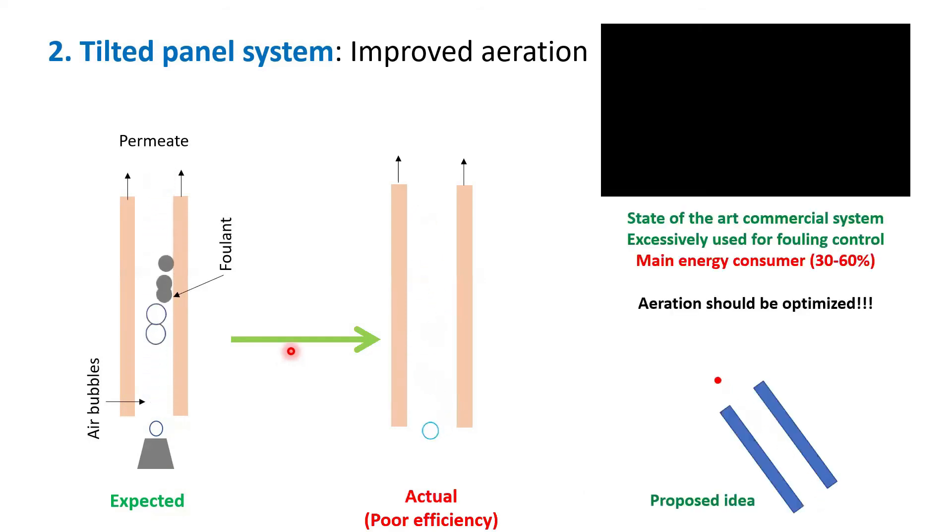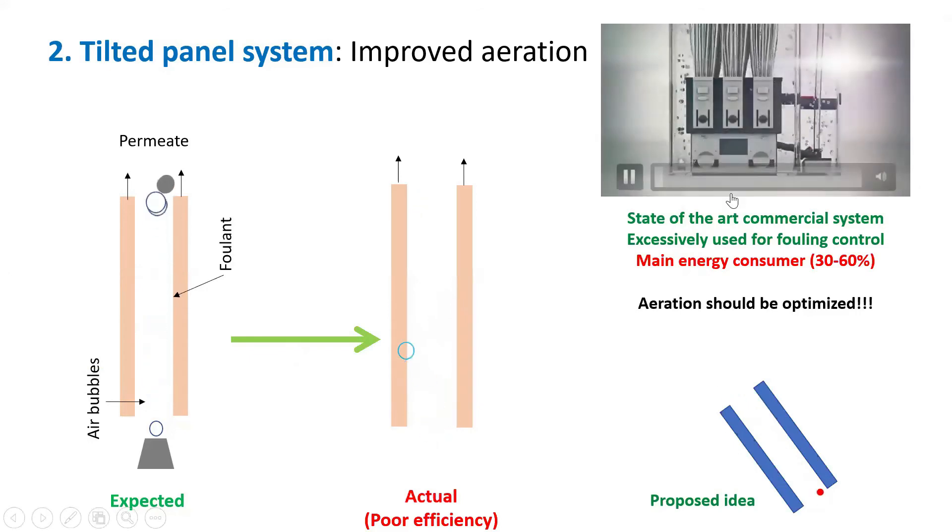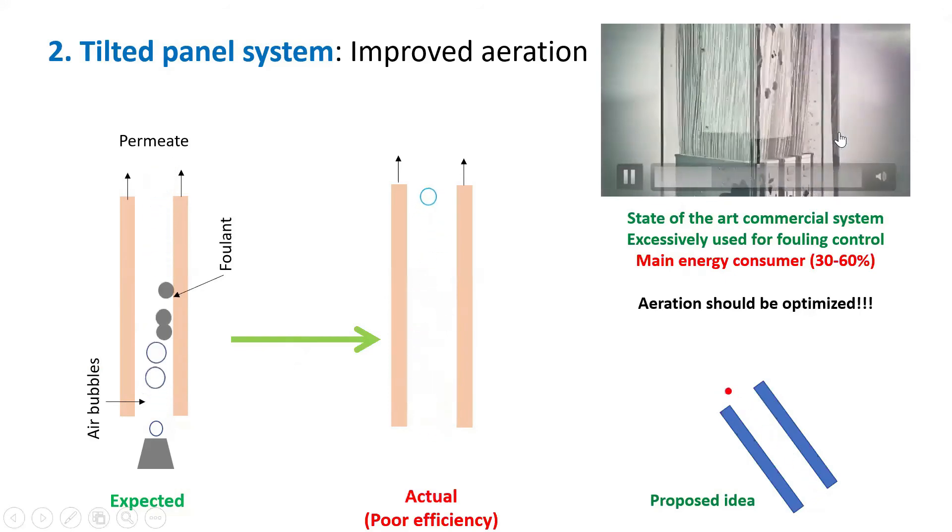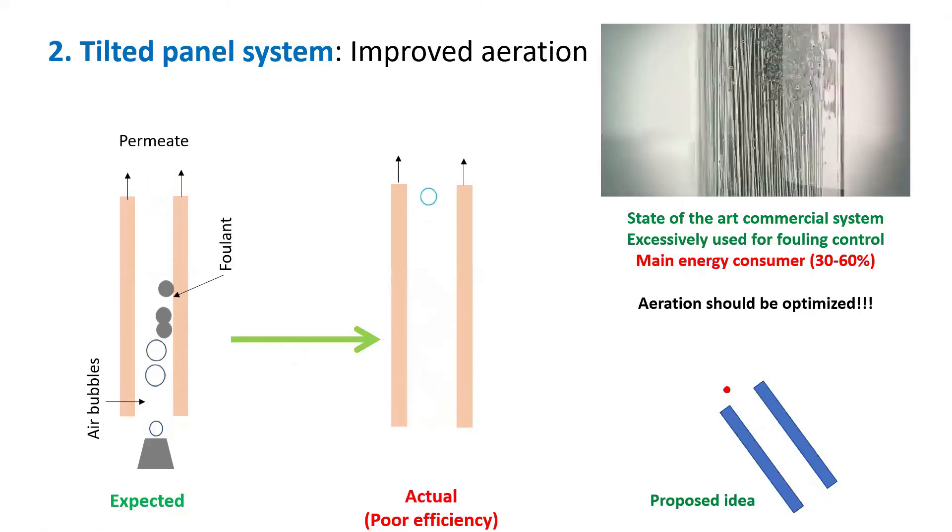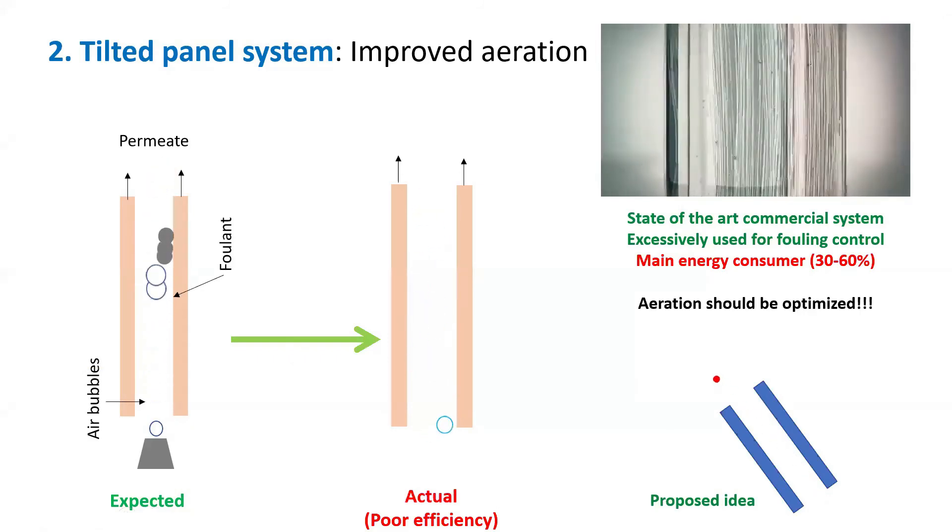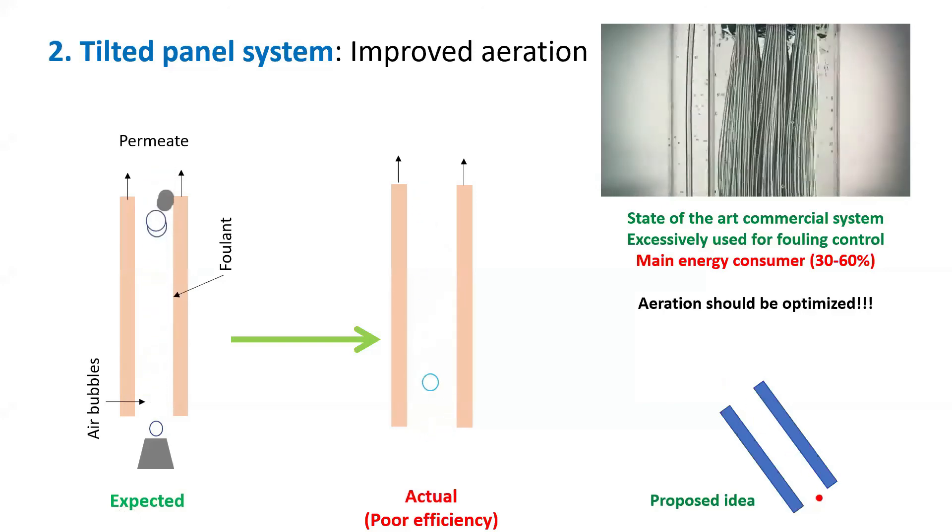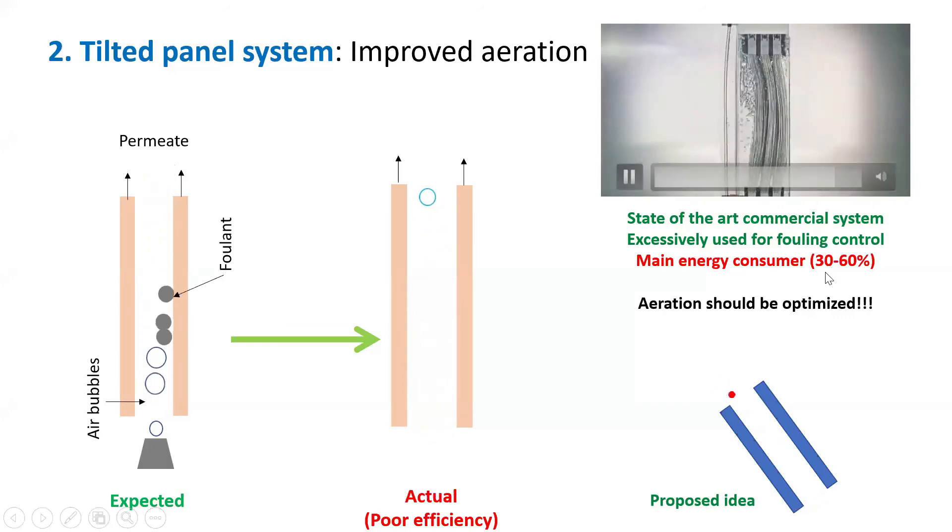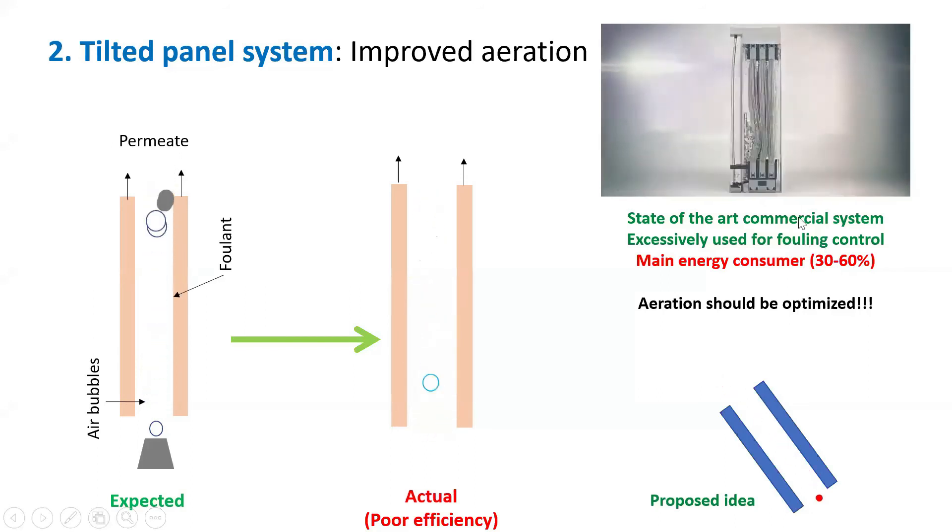The state-of-the-art way of aeration, you can see here, this is called a GE MBR. As you can see, they pump a lot of air, and then for the hollow fiber module, it allows them to sway into swings, and then you can achieve the enhanced cleaning. But the consequences is that if you apply a large amount of air to clean off the membranes, you have high energy consumption. Mainly for coarse bubble aeration, it can go up to 60% of the energy input.